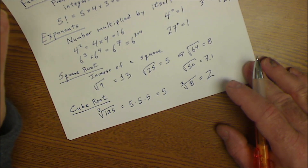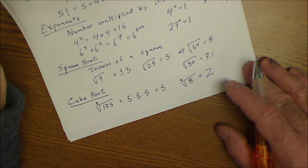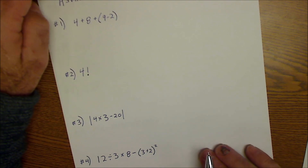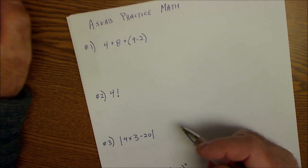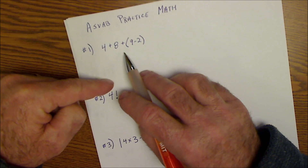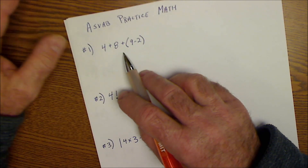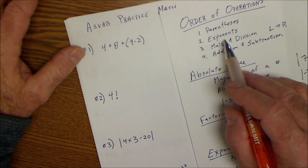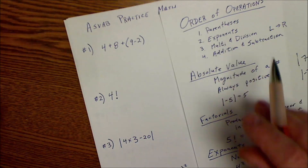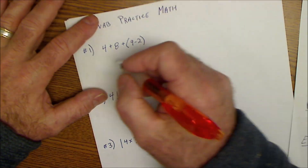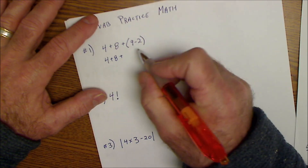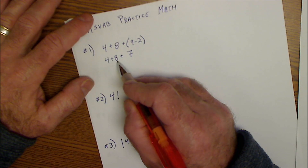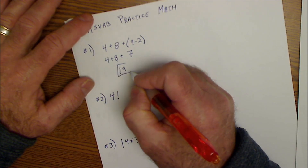Those are the six ideas for the math portion of the ASVAB, and now I have ten practice problems. Looking at the first problem, I can see it's about order of operations. I do parentheses first, then exponents — there aren't any — so I do my exponents: four plus eight, plus the quantity seven. Going left to right: four plus eight is twelve, plus seven is nineteen. That's my answer.